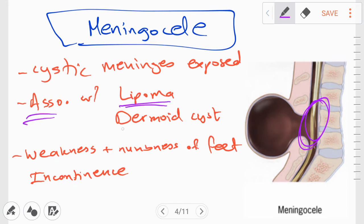It is also associated with lipoma and a dermoid cyst. Dermoid cyst is essentially a tract extending from the skin to the meninges. And when infected, it can cause meningitis. There is also weakness and numbness of the feet. And we can also have incontinence.